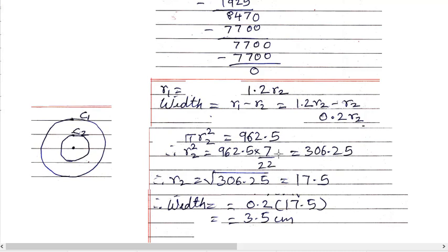Now width is what? R1 minus R2. So 1.2 R2 minus R2, that is 0.2 R2. Now we have to find only R2.